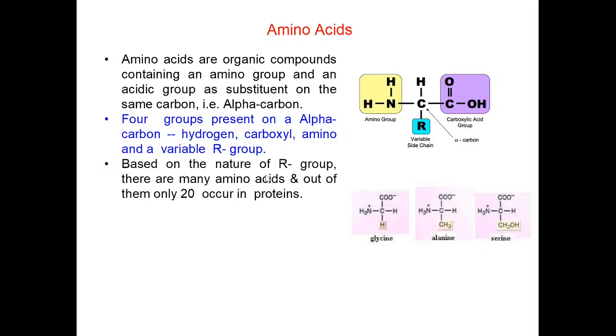Based on nature of R group, there are many amino acids and out of them only 20 occur in proteins. In other words, proteins are made by only 20 amino acids. Different R groups make different amino acids.